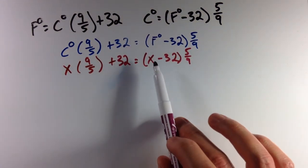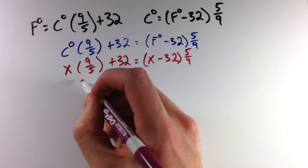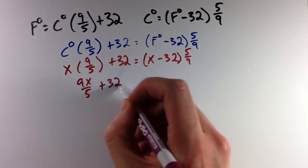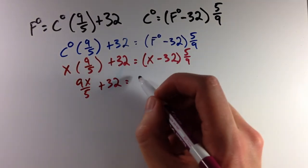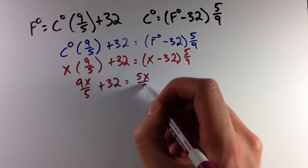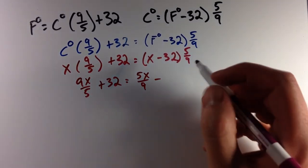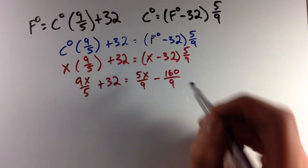Okay, and now we have just a variable x, and we can solve for x. x × (9/5) is 9x/5 + 32 equals, distribute that 5/9 to both parts here. So we have 5x/9 minus 32 × (5/9) will give us 160/9.